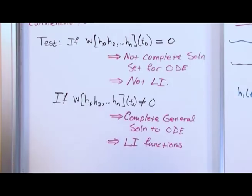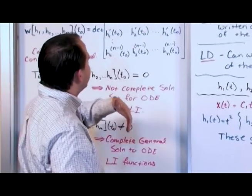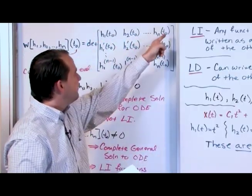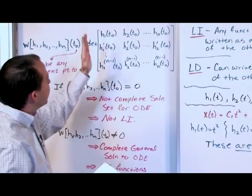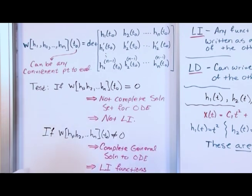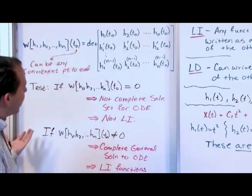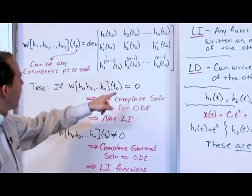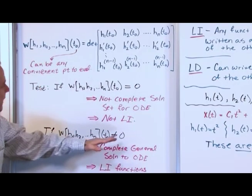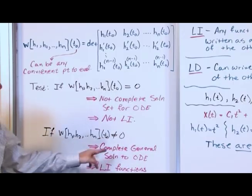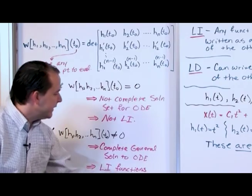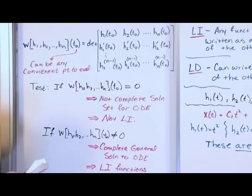So in summary: you're given some functions and asked either 'are these linearly independent?' or 'can these form the general solution of this differential equation?' You put them in the top row of a matrix, take derivatives until you get a square matrix, evaluate every term at any convenient value of time — usually T = 0 — take the determinant, and get a single number. If that number is zero, they are not linearly independent and cannot form the complete solution. If it's anything other than zero — say 54, 9, or 10 — they are linearly independent and do form the complete general solution.